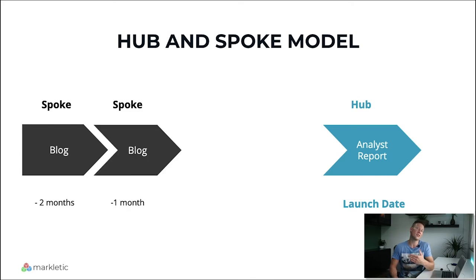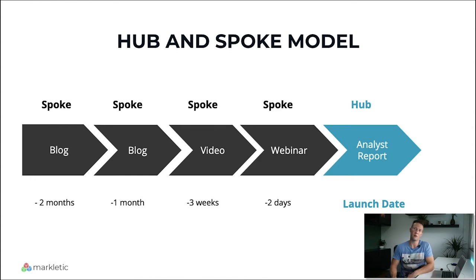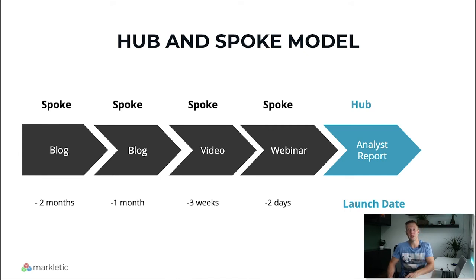One month before launching your hub content, you can publish another blog. Three weeks before, you can publish a video. And a couple of days before launching, you can host a webinar, for example. After publishing your hub content, you can go back to those earlier published pieces of content and place links back to your website, to your hub content. That's how you're going to drive organic traffic to your hub content — it's a scalable way to generate consistent, qualified leads.